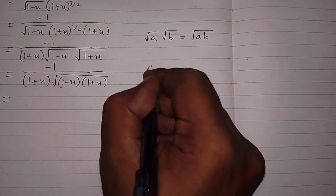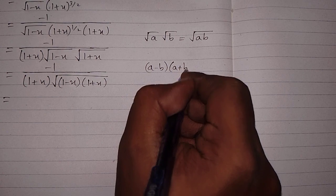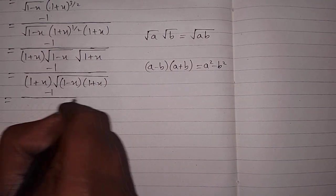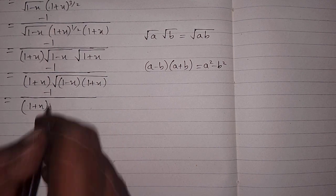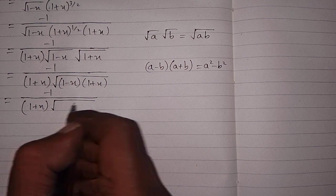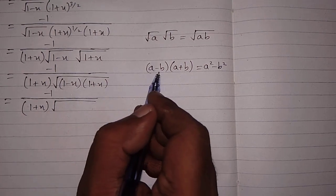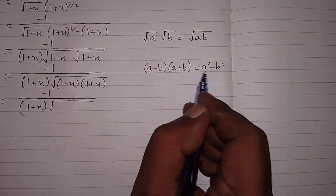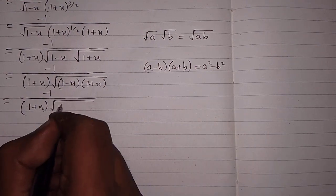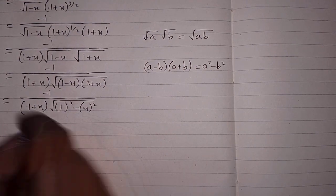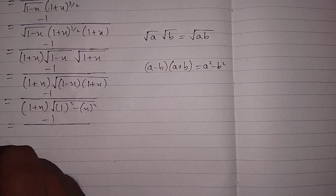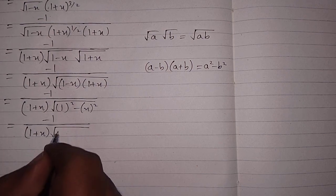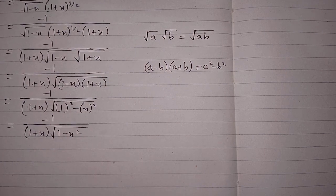Now we apply the formula (a - b)(a + b) = a² - b². Here (1 - x)(1 + x) has a = 1 and b = x, so this equals 1² - x² = 1 - x². Therefore the final answer is: dy/dx = -1 / ((1 + x) · √(1 - x²)).